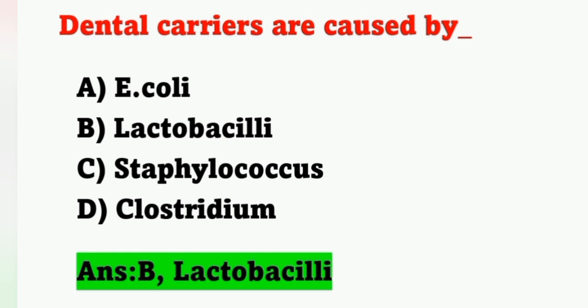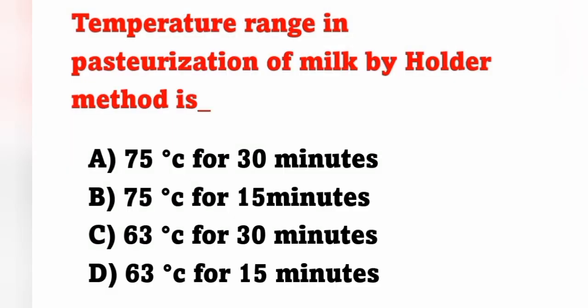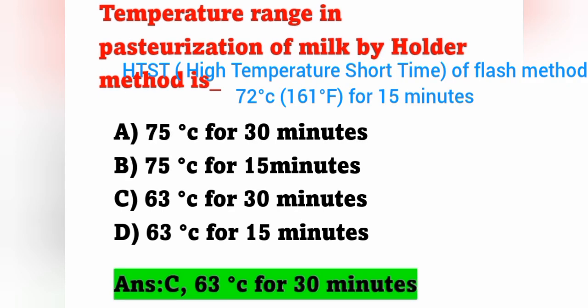Next question: temperature range in pasteurization of milk by the Holder method — option A: 75°C for 30 minutes, option B: 75°C for 15 minutes, option C: 63°C for 30 minutes, option D: 63°C for 15 minutes. The correct answer is option C: 63 degrees Celsius for 30 minutes, by the Holder method.